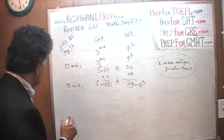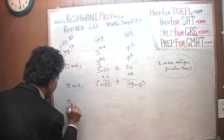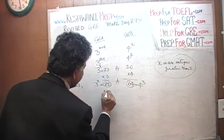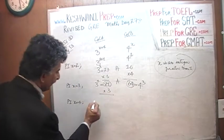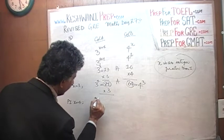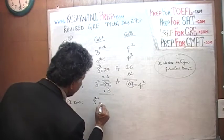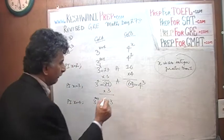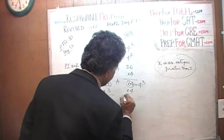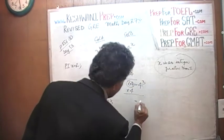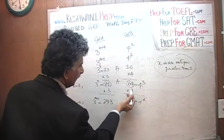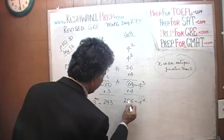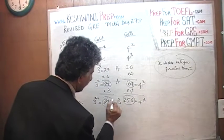Let's plug in x equals 4. We multiply Column A by 3, giving us 3 raised to 5, which is 81 times 3 — that's 243. On the Column B side, we multiply 64 by 4, giving us 4 raised to 4. 4 times 4 is 16, carry 1, and we get 256. So it's 256 versus 243 — now the answer is B.